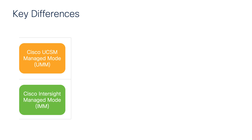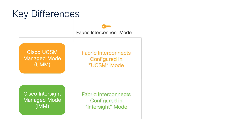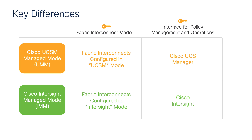I want to reiterate two key differences between IMM and UMM. The first difference is the mode the pair of fabric interconnects are running in — UCSM mode or Intersight mode. Literally one of the first questions when you set up a new pair of fabric interconnects from the CLI is which mode you want to run the UCS domain in. The second difference is which entity owns the policy configuration and what interface you use for operations. In UMM mode that is UCS Manager; in IMM mode that is Intersight. There are nuances and other lower-level differences between the two, and we'll get to more of those throughout the entire video series.